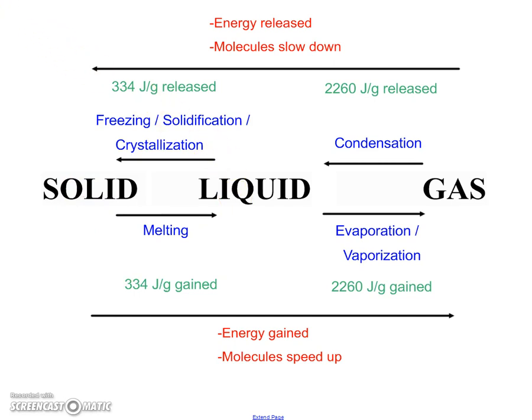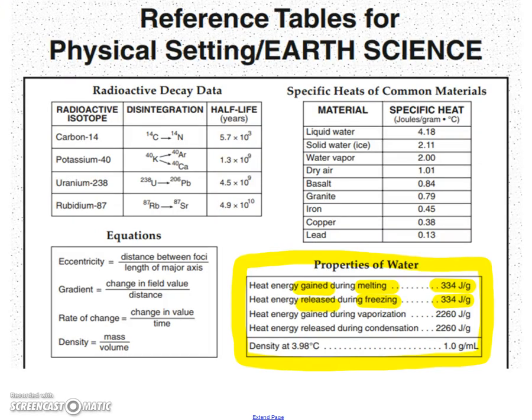So the key thing with this is you have to pay really close attention when you're using this chart as to whether it says gained or released. That's the thing that most people tend to make mistakes with, is that they're not paying attention to those words. We also have the names of the phase changes here, so you don't have to memorize it as long as you remember that you could look here.